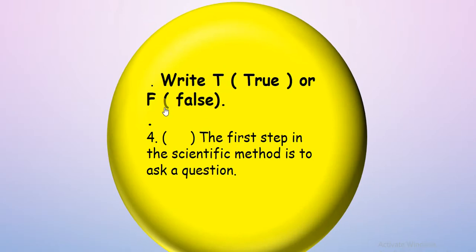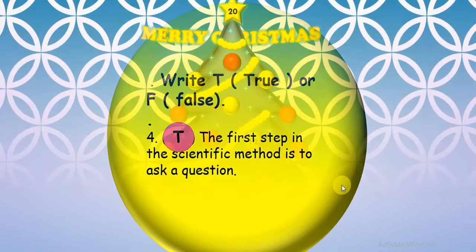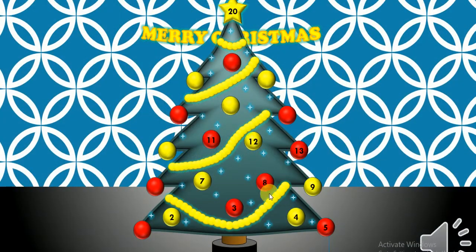Let's try another one — write T if it's true or F if it's false: the first step in the scientific method is to ask a question. Is this true or false? True! Excellent — it is the first step. Good job, guys!